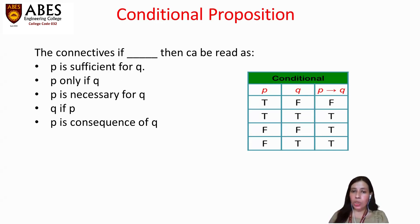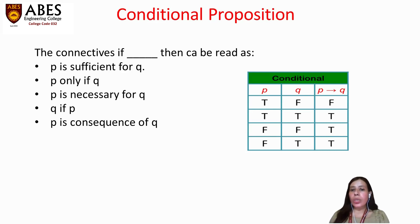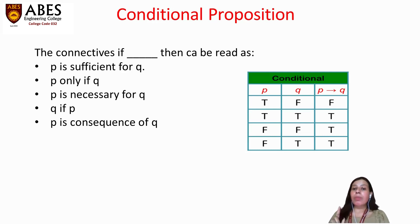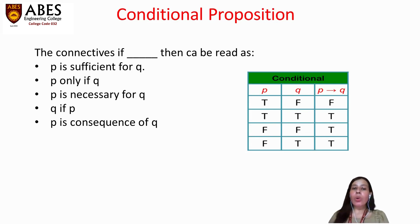We have three columns: P, Q, and P → Q. When P is true and Q is false, P → Q holds the value false. When P is true and Q is true, P → Q is also true. If P is false and Q is true, then P → Q also holds the value true. So P → Q is false only when P is true and Q is false.